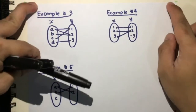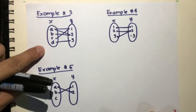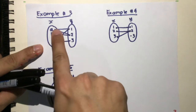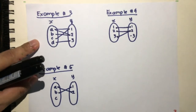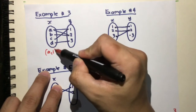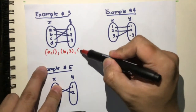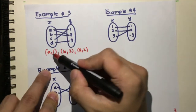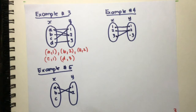Now let's use mapping diagrams to identify whether a given diagram is a function or just a mere relation. Identify the values of the first element (x's) and the second element (y's). The lines connecting elements form ordered pairs. So we have: a goes to 1, b goes to 2, and then a also goes to 2, and c goes to 1, while d goes to 3.